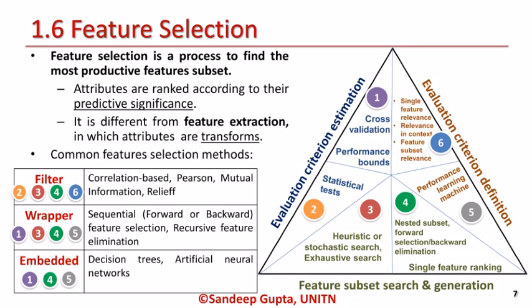Embedded methods combine the qualities of filter and wrapper feature selection methods. An intrinsic model building metric is used during learning. Both wrapper and embedded methods are classifier-dependent, but the latter are more computationally efficient. The combination of wrapper and filter methods is also called hybrid methods. The commonly used embedded methods are decision trees and artificial neural networks.